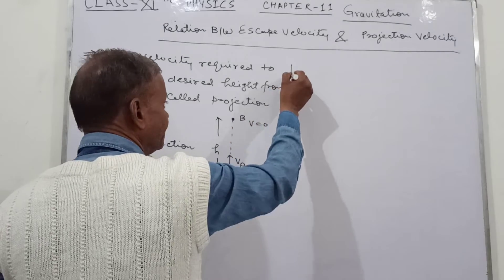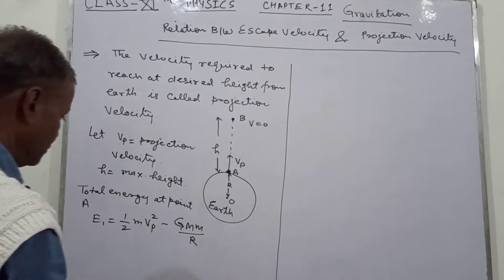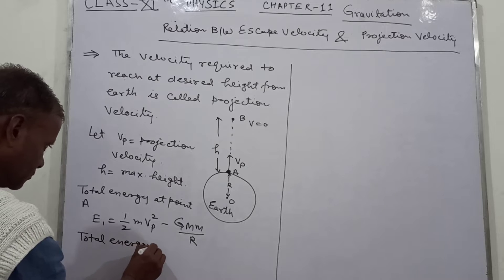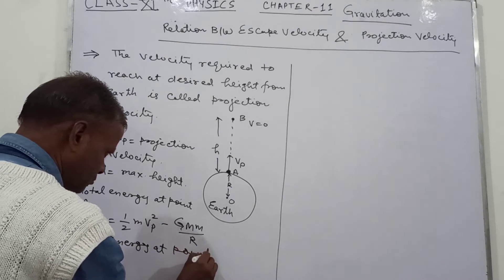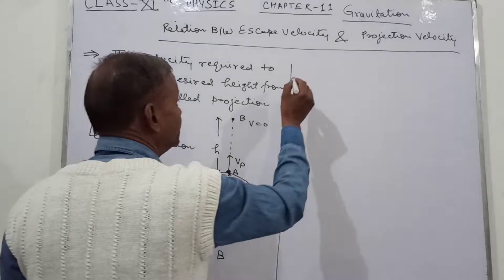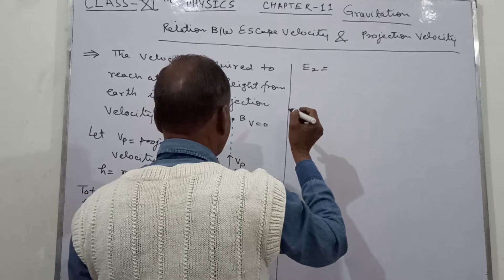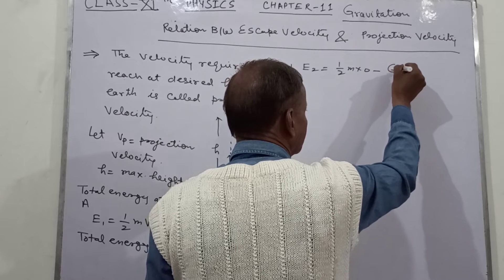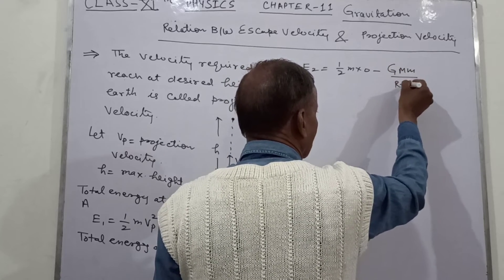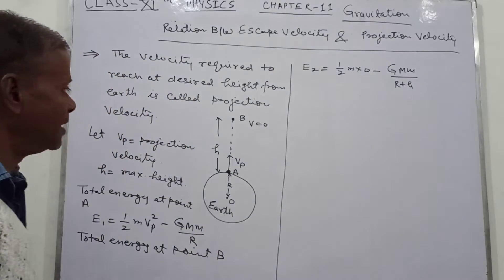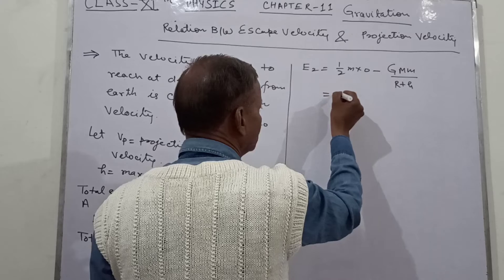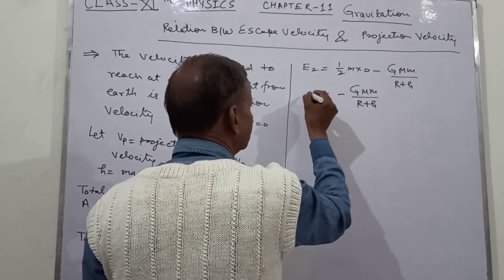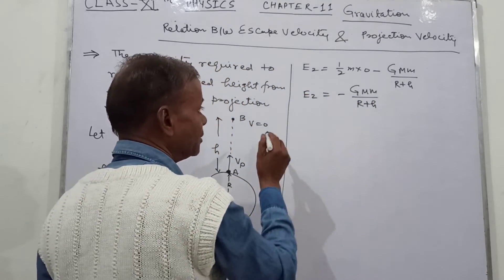At point B, the final velocity is equal to zero, so E2 is equal to zero minus GMM upon R plus H. This gives E2 equal to minus GMM upon R plus H.